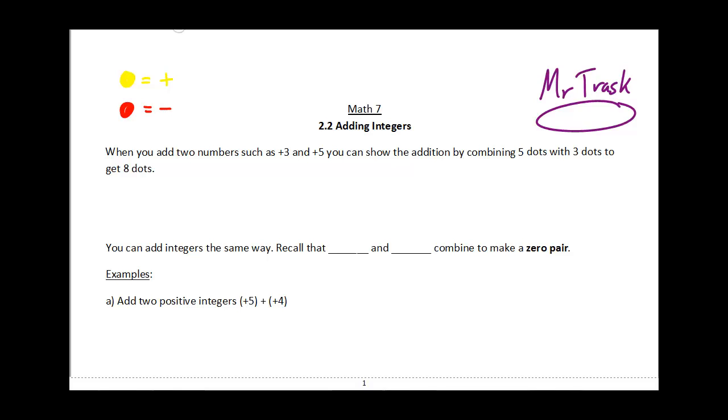So when we add two numbers together such as plus 3 and plus 5, we can show the addition just by combining the dots. So if I've got three positive dots and then I want to add to that five positive dots,